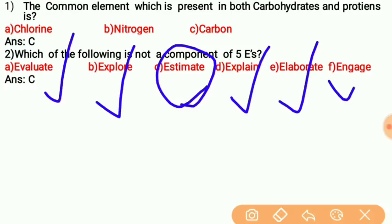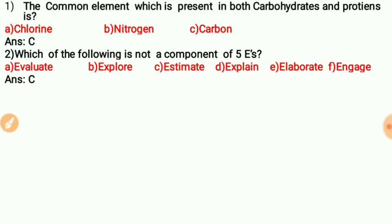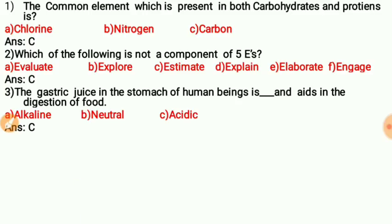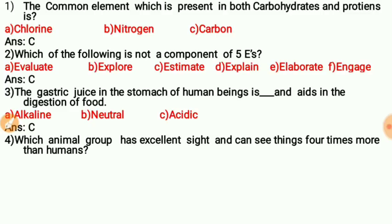Question three: Gastric juice in the stomach of human beings is blank and aids in the digestion of food. The correct answer is option C — acidic. Gastric juice is acidic and it helps in the digestion of food.